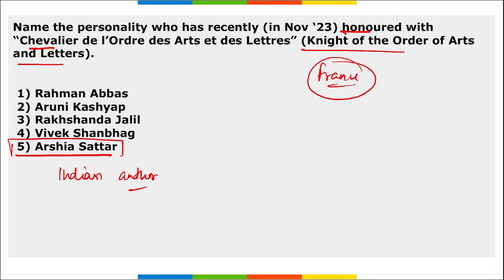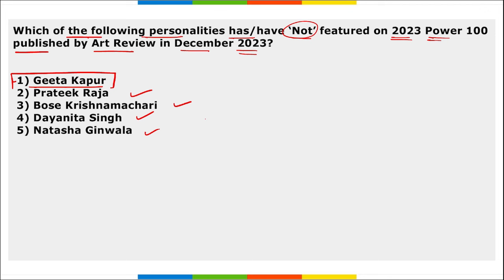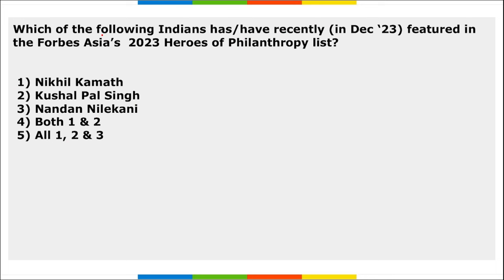Which of the following personalities have not featured on the 2023 Power 100 published by Art Review in December 2023? Geeta Kapoor has not featured. The four individuals who were listed include Prateek Raja, Bose Krishnamachari, Dayanita Singh, and Natasha Ginwala. There is one more name — Priyanka Raja. These are the five Indians featured on the 2023 Power 100 published by Art Review in December.